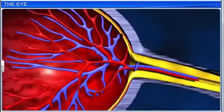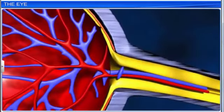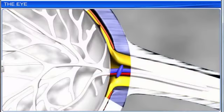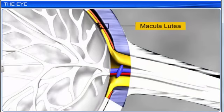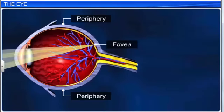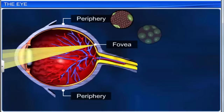The posterior end of the eyeball, lateral to the blind spot, has a yellowish pigmented spot called the macula lutea, with a central pit called the fovea. The density of cones in this region provides the best visual acuity.